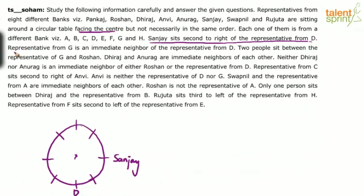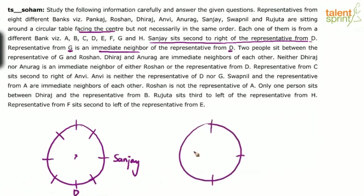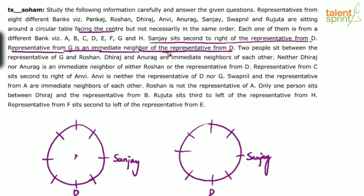The representative from G is an immediate neighbor of the representative from D. So G is an immediate neighbor of D. There are two possibilities — G can be on either side of D. We immediately consider both cases by duplicating the diagram with G on each side of D.